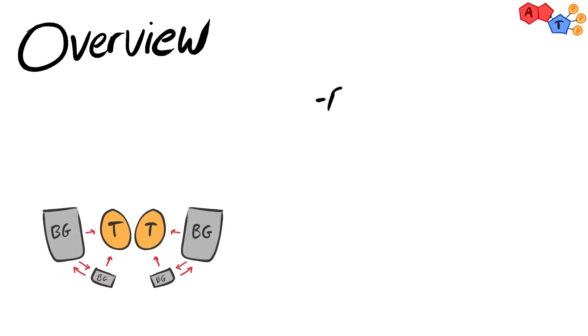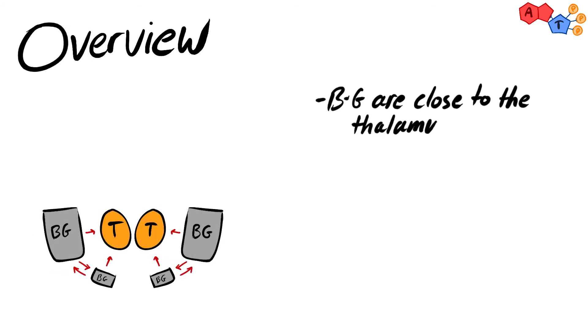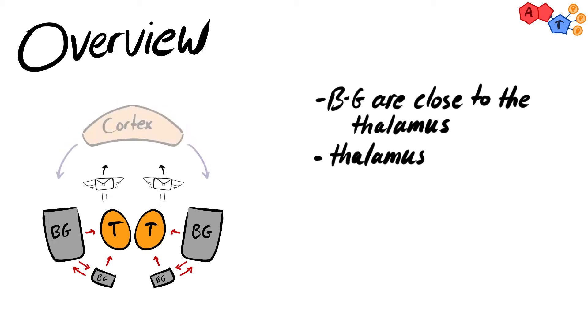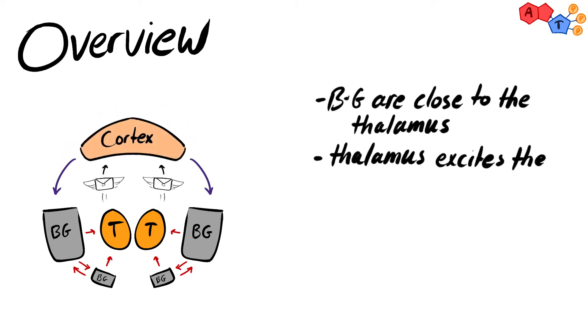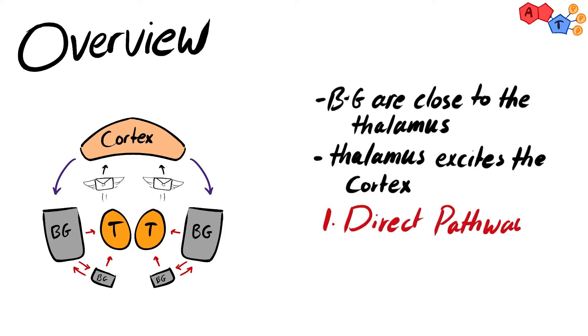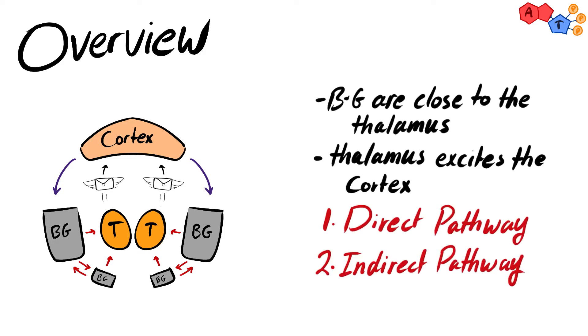The basal ganglia lies very closely to the thalamus, which is important for transmitting signals from and to the cerebral cortex - both motor and sensory information. The striatum, the major input nucleus, projects to the globus pallidus via two major pathways: the direct and indirect pathways.